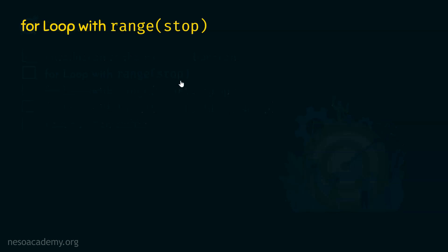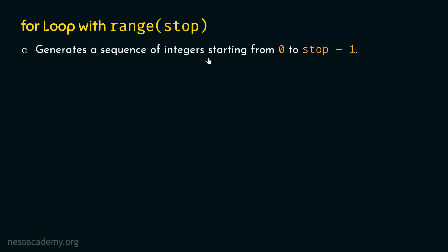Now let's look at for loop with range stop. The stop argument is mandatory for the range function to generate a series of numbers. Range(stop) generates a sequence of integers starting from zero — the default start — up to stop minus one. For loop, similar to while loop, allows us to execute a piece of code a certain number of times. We will understand how for loop works with the help of an example.